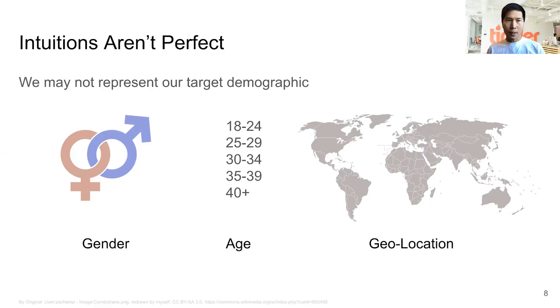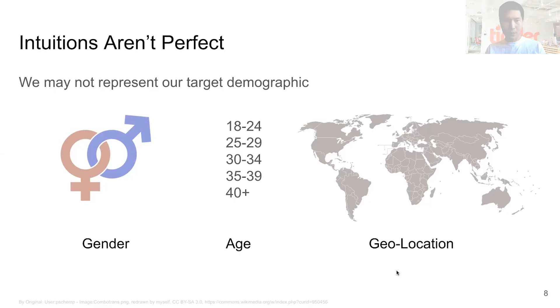That's an example of how our intuitions aren't perfect and why it's good to experiment — we may not represent our target demographic. We're not all the same gender, the same age, and we don't live in the same locations.